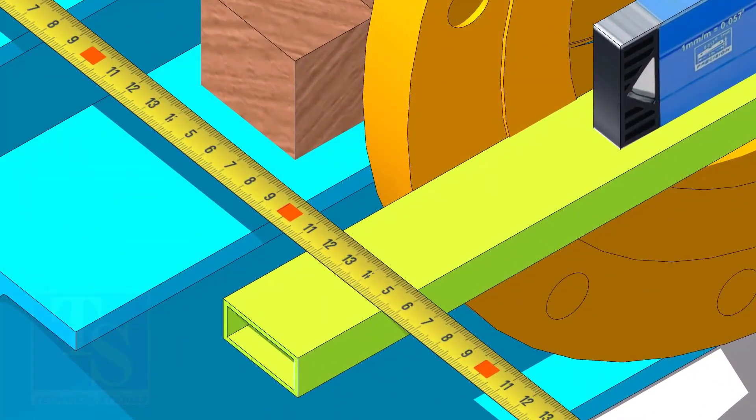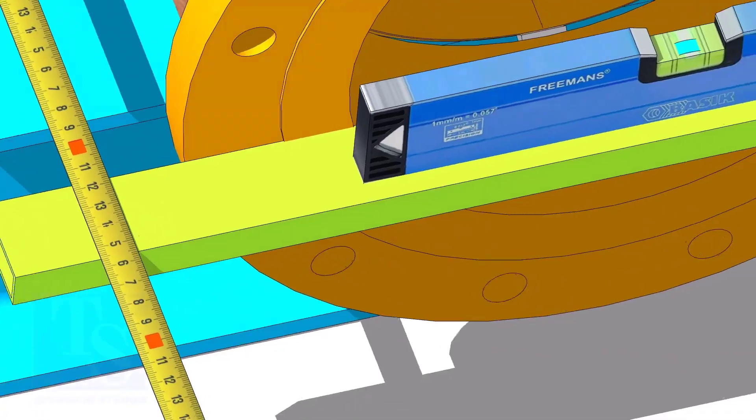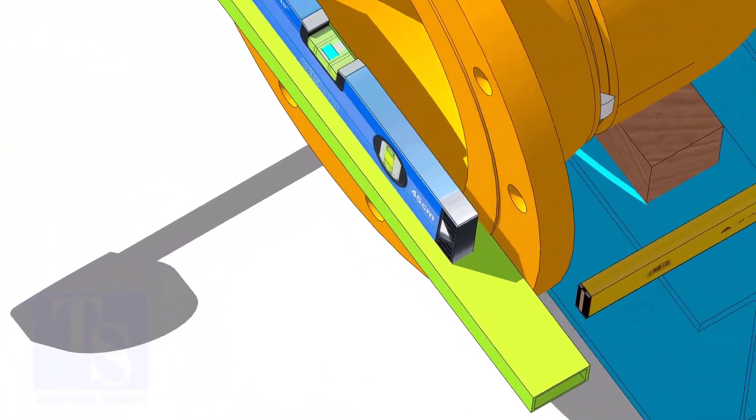Check the length of the spool on both sides. If the dimensions are equal or within acceptable limits, tack weld on both sides.